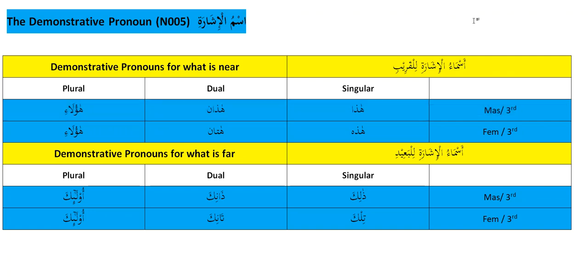For example, we say 'bint' for girl — the meaning itself is feminine. But if I say 'shajara,' meaning tree, there's a feminine ending on the word itself, so the word is feminine. So if I were to indicate a tree I would say 'hadhihi shajara' if it's near, or 'tilka' if it's far. Words are masculine or feminine based on meaning or the structure of the word.